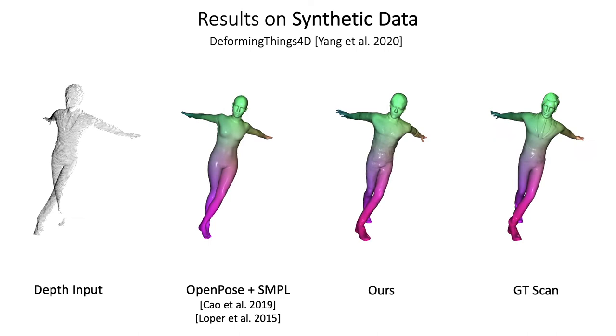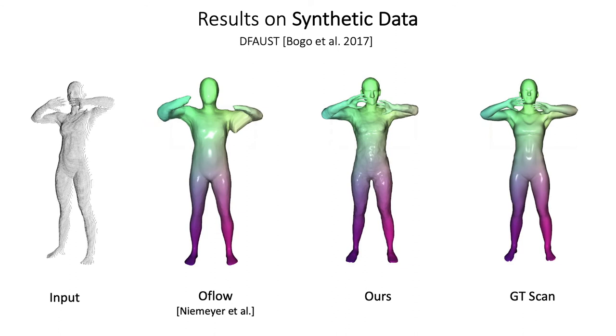We also compare with occupancy flow on the dynamic FAUST dataset, achieving better tracking while more accurately representing the shape.